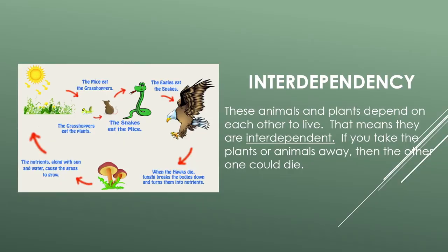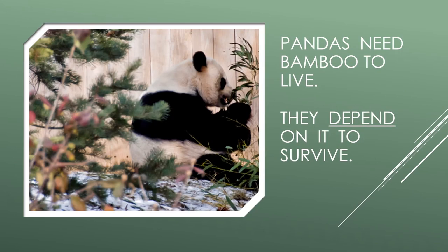Interdependency — interdependency depends on you and me. Interdependency relies on you and me. Let's review why plants and animals rely on each other, or depend on each other, to live. These animals and plants depend on each other to live — that means they are interdependent. If you take the plants or animals away, then the other one could die. Panda bears and bamboo are interdependent. The pandas need bamboo to live; they depend on it to survive.